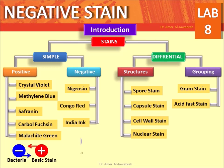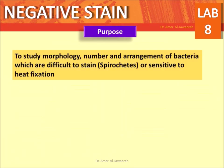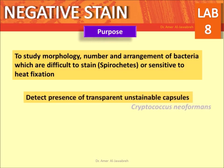Positively charged basic stains are attracted to negatively charged bacteria, while negatively charged acidic stains repel negatively charged bacteria. The purpose of negative staining is to study morphology, number, and arrangement of bacteria which are difficult to stain, such as spirochetes, or those sensitive to heat fixation.